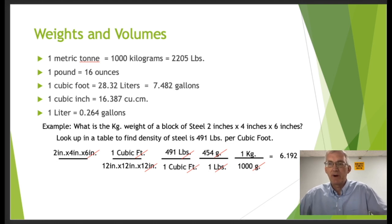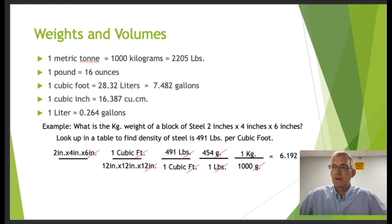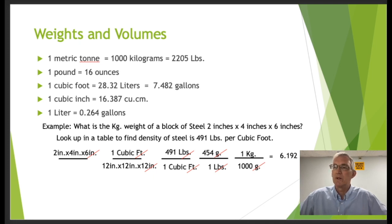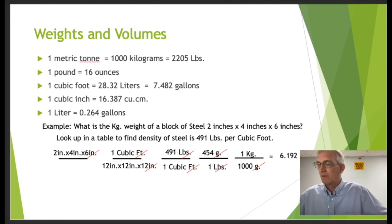Now let's look at weights and volume conversion. One metric ton equals 1,000 kilograms, which equals 2,205 pounds. One pound equals 16 ounces. One cubic foot equals 28.32 liters, which also equals 7.482 gallons. One cubic inch equals 16.387 cubic centimeters, and one liter equals 0.264 gallons. These are values you may want to memorize, or at least be familiar with — they can also be looked up in a table.